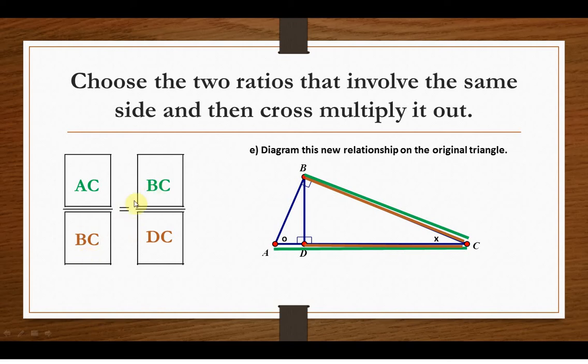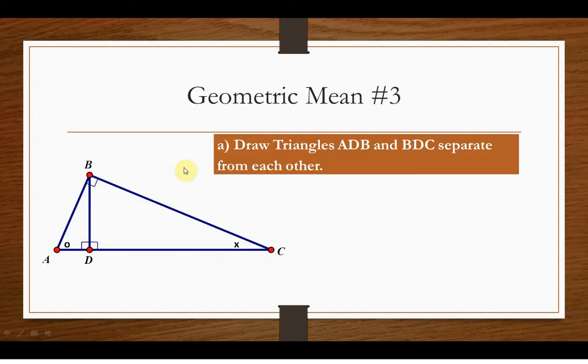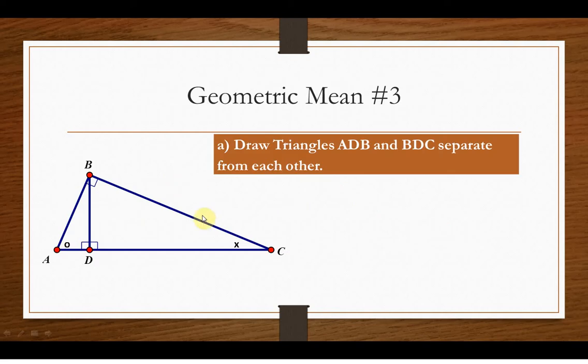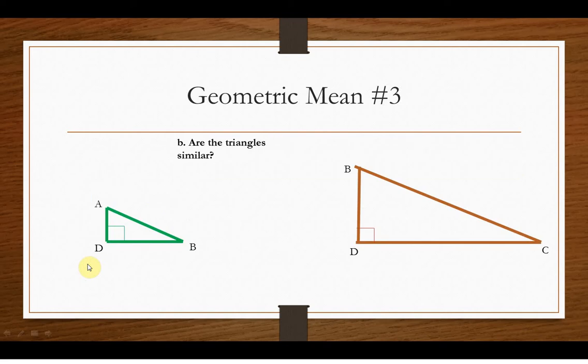And again, BC would be the geometric mean, because that's the piece that's repeating. Something will always repeat like that diagonally. The last one, ADB and BDC. So that's the medium triangle and the small triangle. This one's a little bit easier to see. You can see where they're overlapping. It's right here at BD. So are these triangles similar?